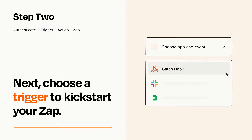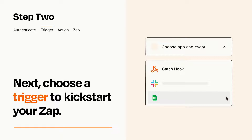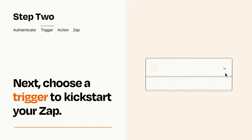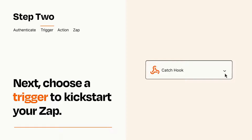Now let's set up your trigger, which is the event that starts your Zap. Pick the trigger event that you want from the list. When you set up this step, your Zap will pull in test data from your trigger app that you'll see later when setting up your action app.